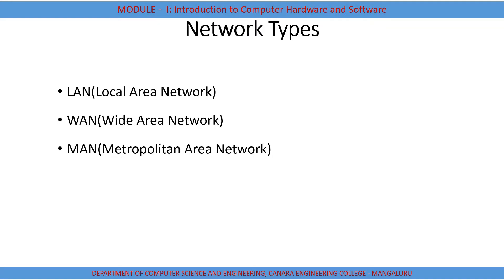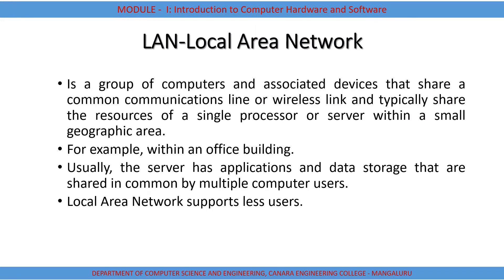Whenever we connect two or more devices together, we can call it a network. There are three basic types of network: LAN, MAN, and WAN. LAN stands for Local Area Network, MAN for Metropolitan Area Network, and WAN for Wide Area Network. This categorization is based on area coverage — what is the area limit when we interconnect two or more computers. Based on the area, we have three different types.